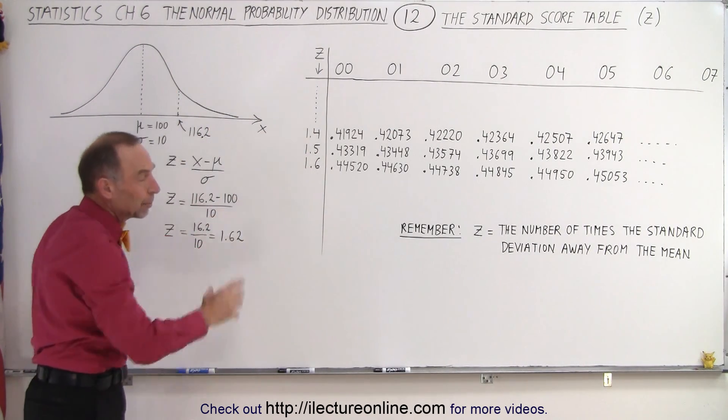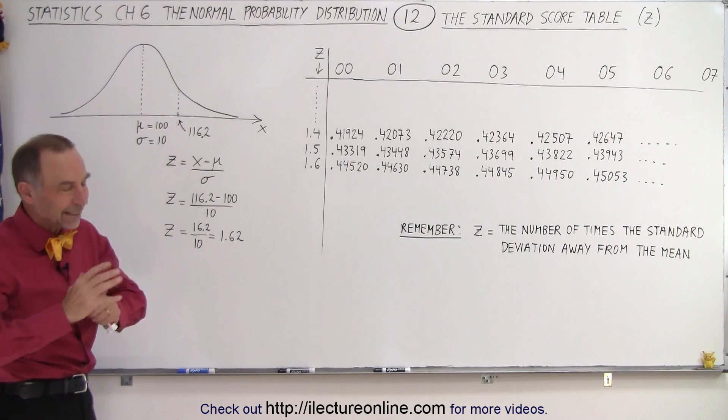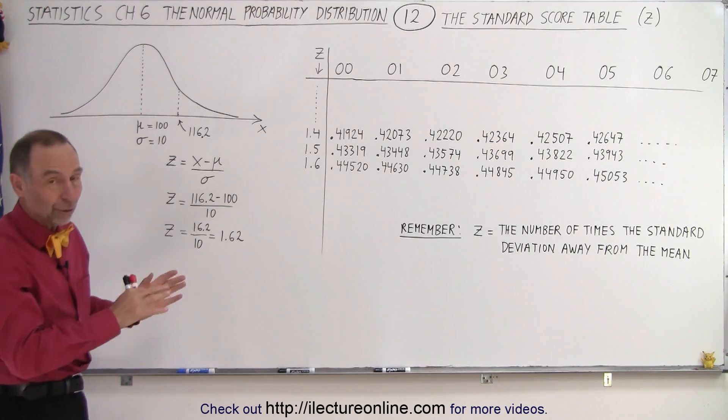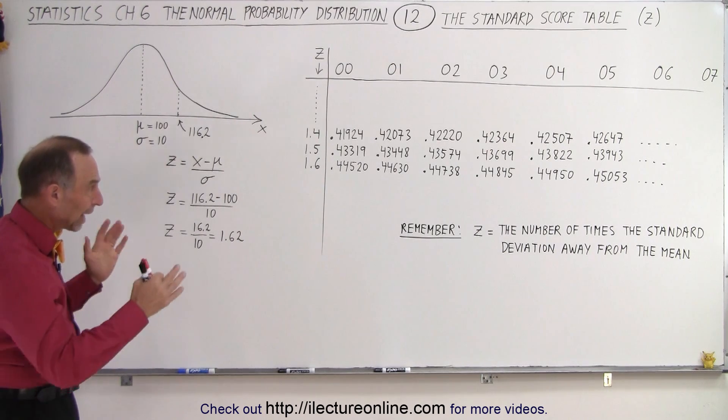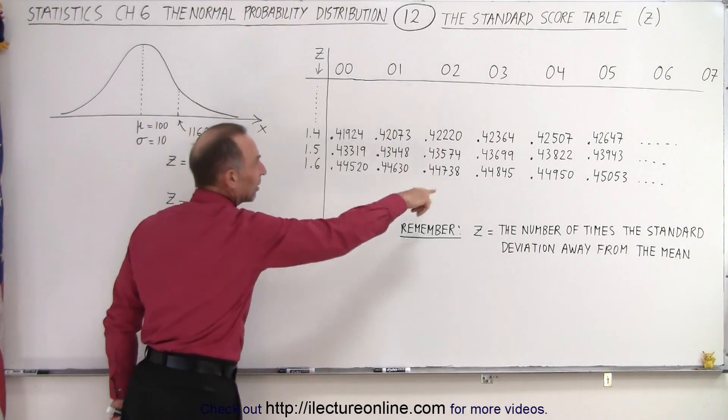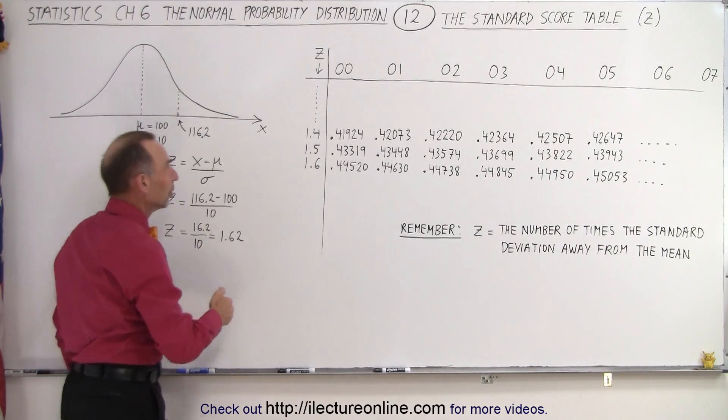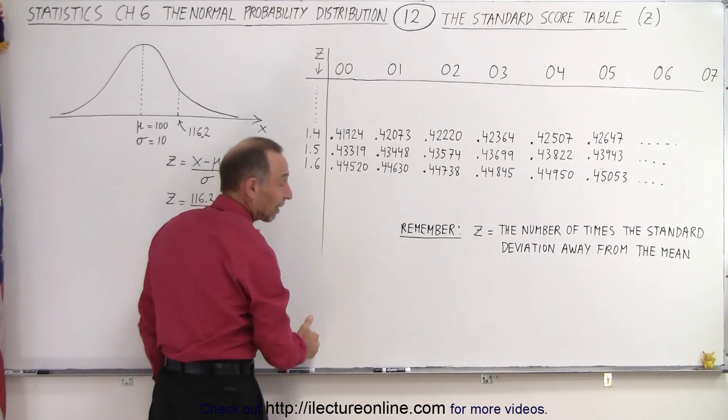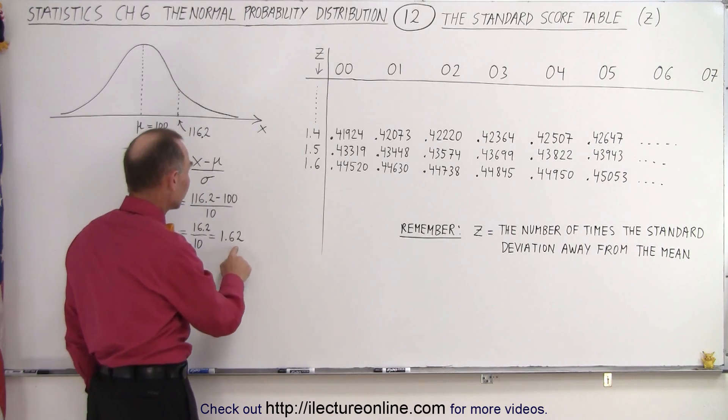Well it turns out we need a table because we already saw in the previous video that it's very difficult to actually calculate that very complicated integral. Maybe at the end of all this series of videos we'll show you how to actually do that, but it's quite challenging. So we have this table that's pre-prepared for us. So what we need to do now is find the associated value inside the table that corresponds to Z equal to 1.62. So we start over here. We have Z starting from 0 and the table usually goes up to about 4, 5 or 6 depending upon how far they want the table to go. And so we're looking for 1.62. So here we have 1.6. The next value of course in the table would be 1.7.